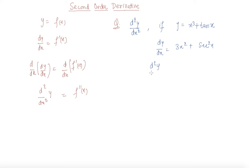To differentiate this function again, we get 6x plus 2 sec x times the derivative of sec x, which is sec x tan x. So this is the double derivative, or you can say the second order derivative of this function.